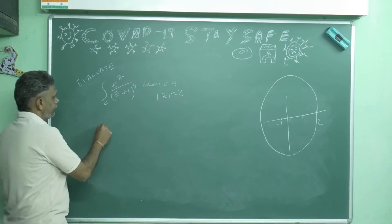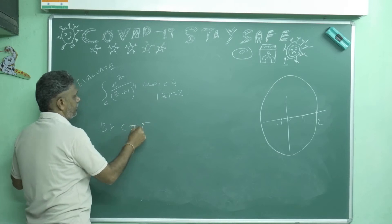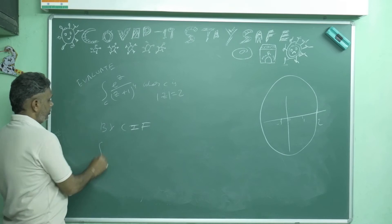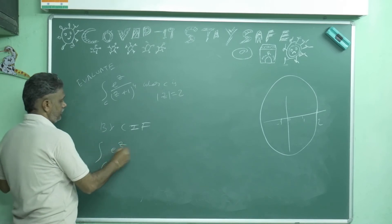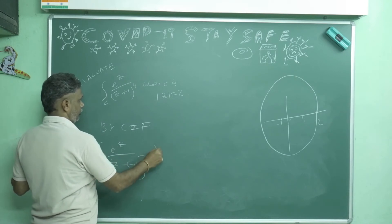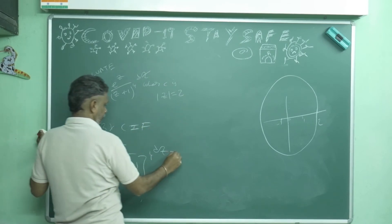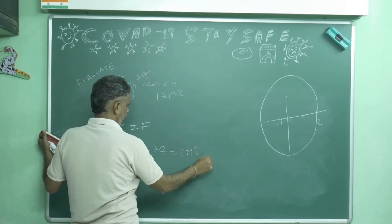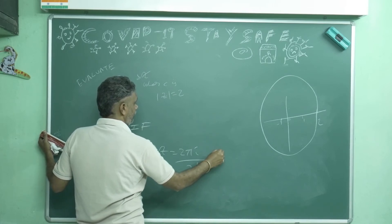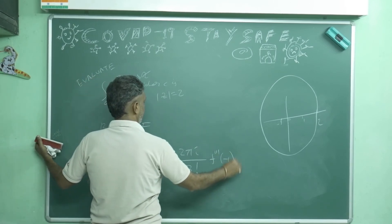So by Cauchy's integral formula for multiplicity points, this integral over c, e power z divided by z minus of minus 1 whole power 4 dz is equal to 2 pi i by 3 factorial, then f triple prime at minus 1.